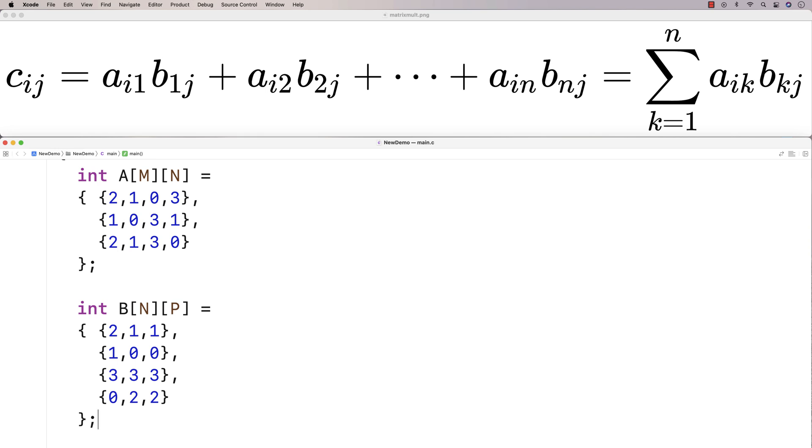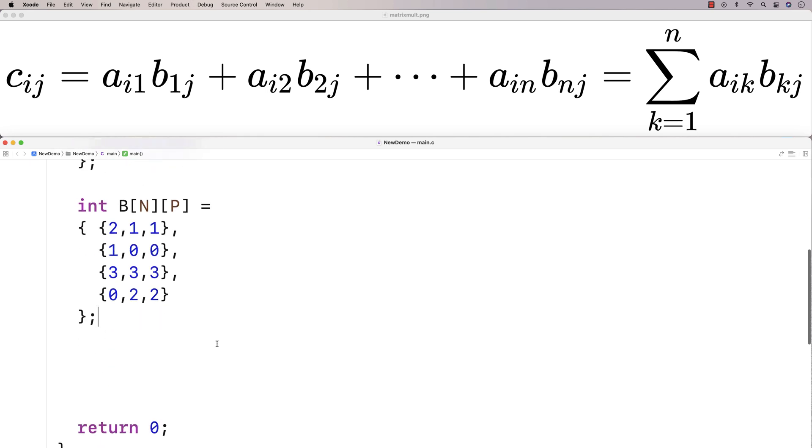So we've got our two input matrices defined using these two 2D arrays. We're going to have to use a 2D array to store the result as well. So here I'll say int C[M][P] to store the result into this 2D array here C.